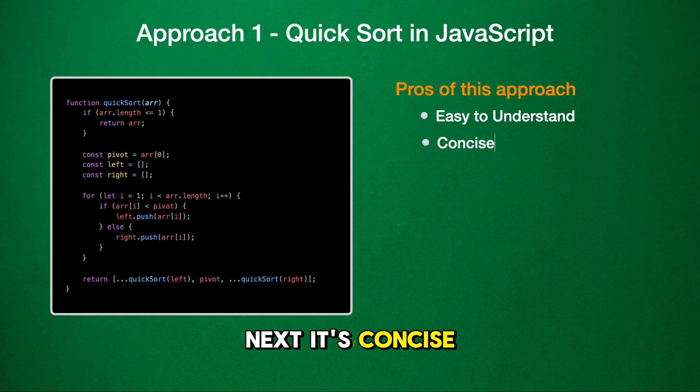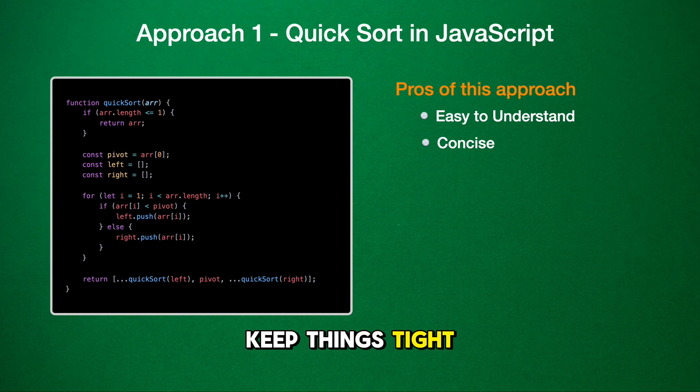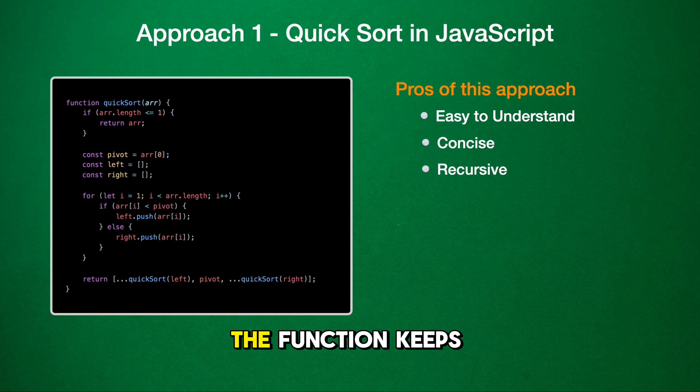Next, it's concise. This code is short and sweet. It uses JavaScript's cool tricks to keep things tight, like a magician pulling a rabbit out of a hat. And it's recursive. This is where the magic happens. The function keeps calling itself to sort pieces of the puzzle. It's like cleaning your room by first tidying up one corner at a time.